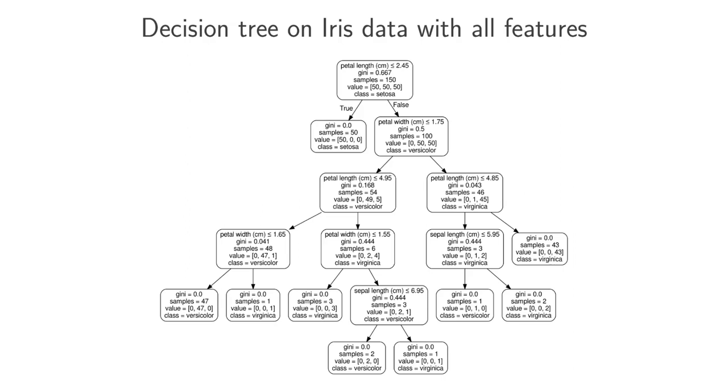So that decision tree was grown based on two features, the petal length and the petal width. You could also grow a decision tree or build a decision tree on all the features, the petal length, the petal width, and the sepal length and the sepal width. So then your inputs won't be just two-dimensional. It will in fact be four-dimensional. And your tree could then maybe be a lot bigger.